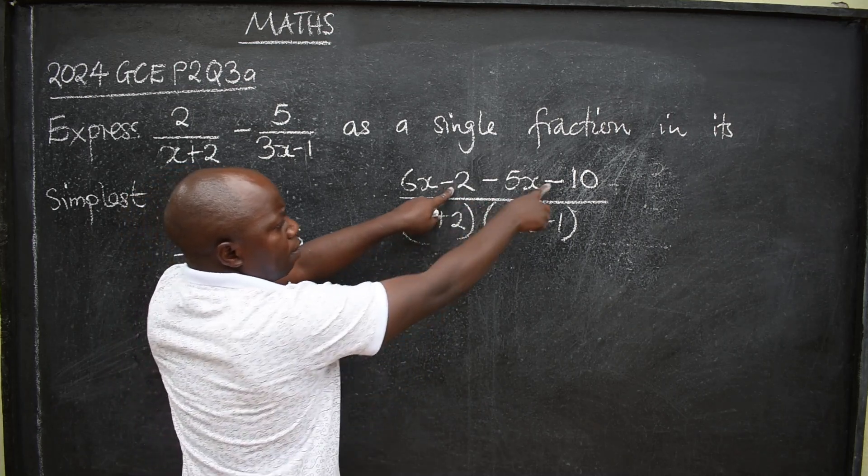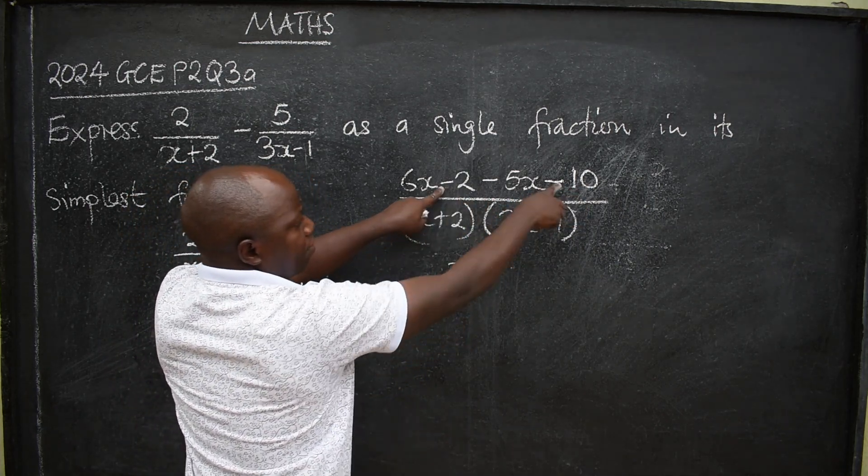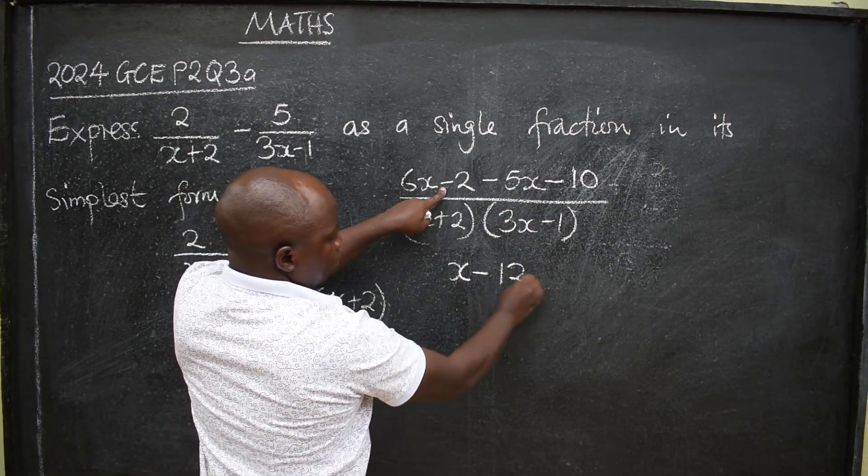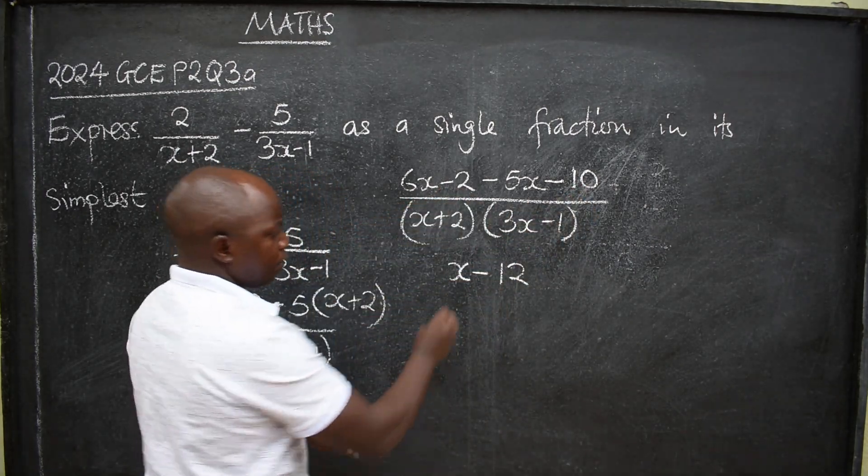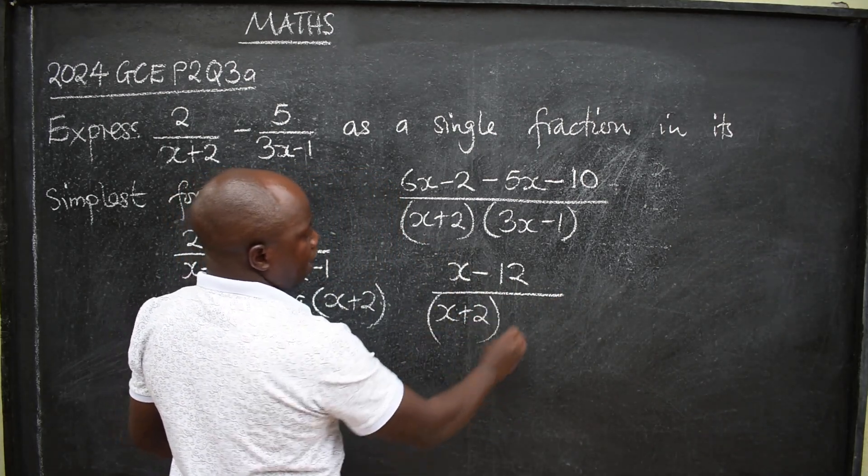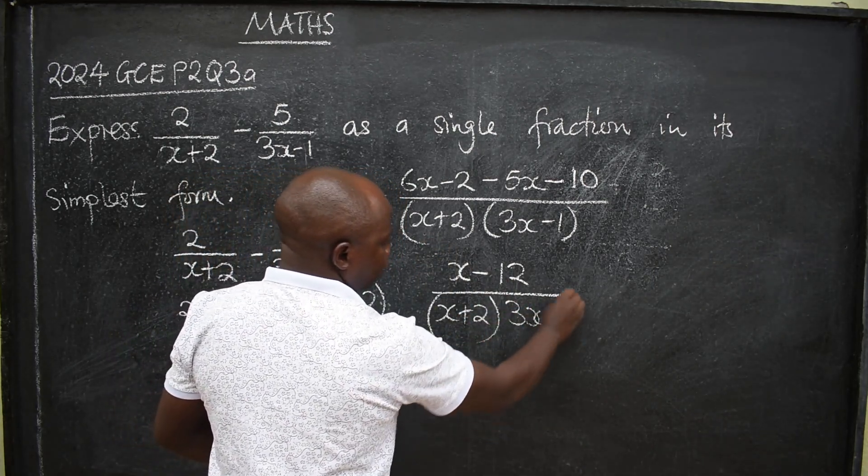Then negative 2 minus 10. Negative, negative, add. So it will be negative 12. That is 2 plus 10. It will be negative 12. Everything. x plus 2. Then we have 3x minus 1.